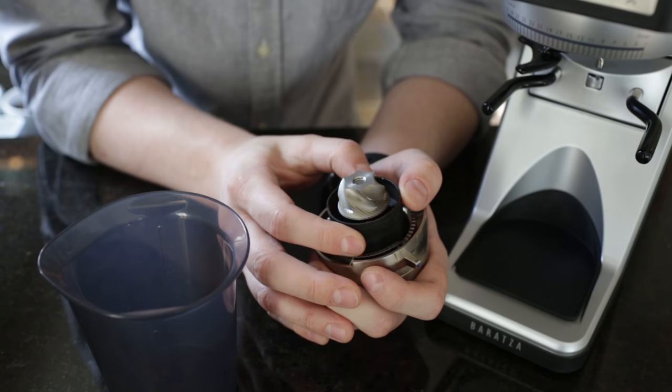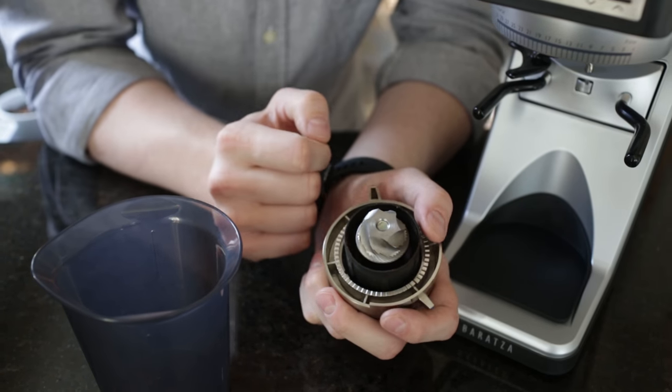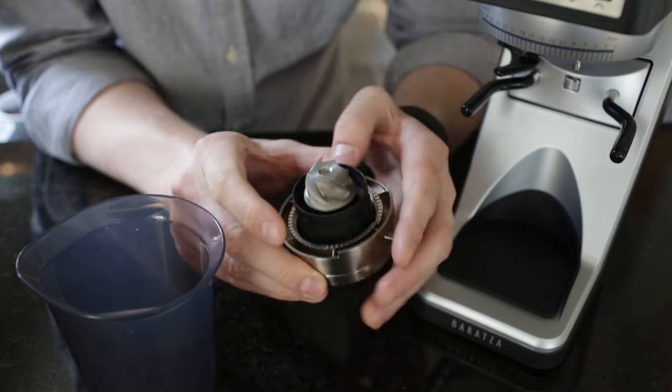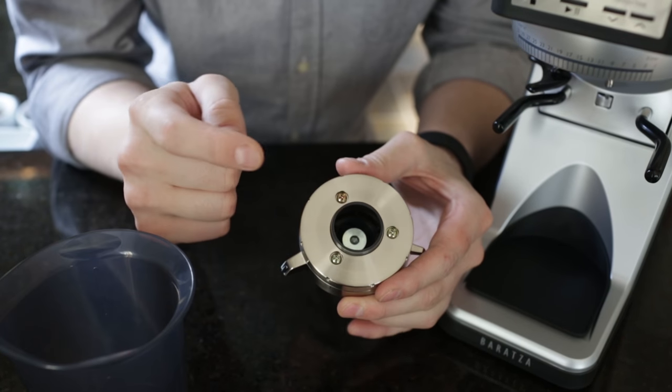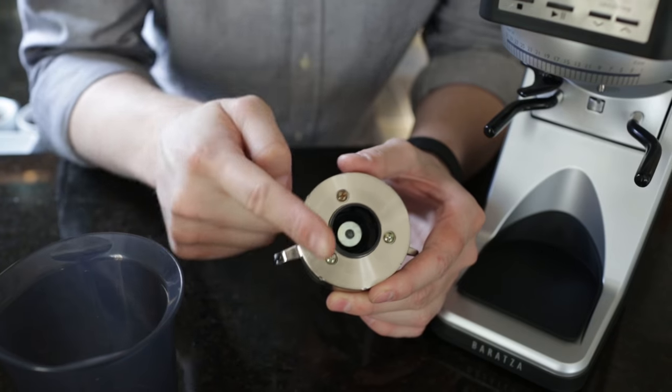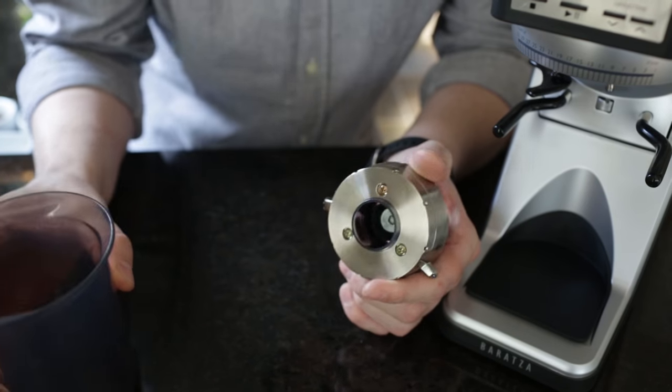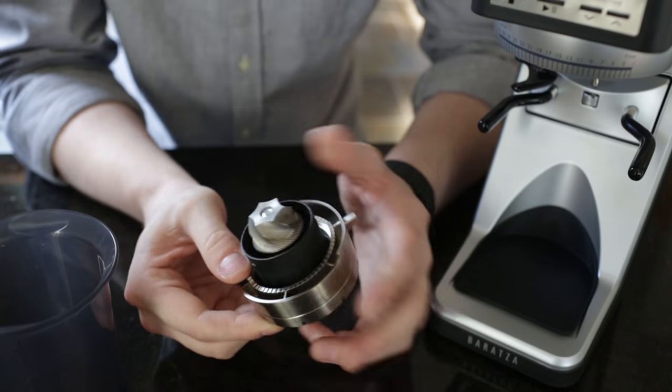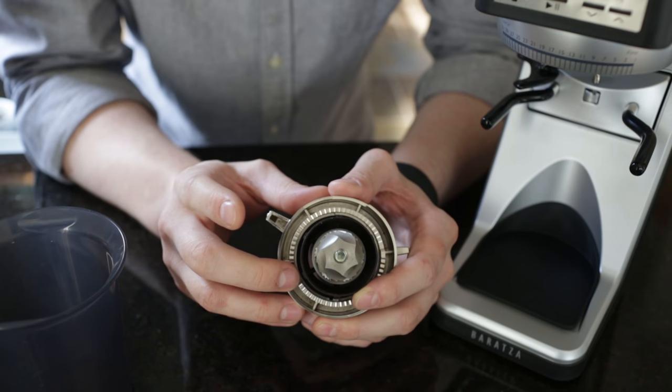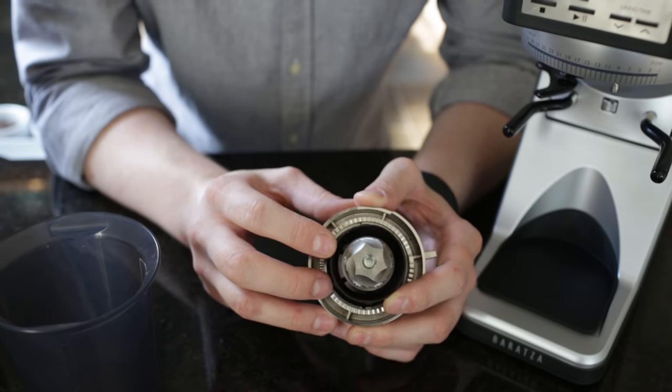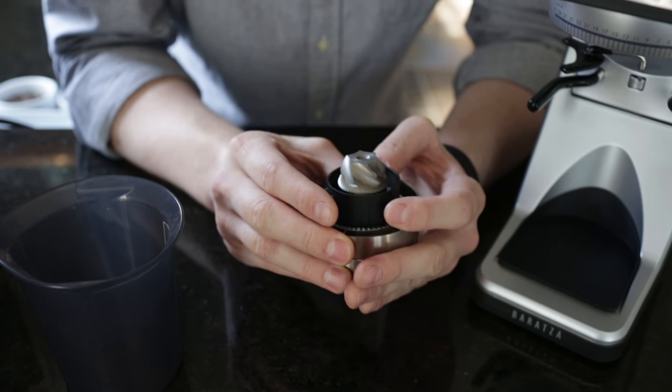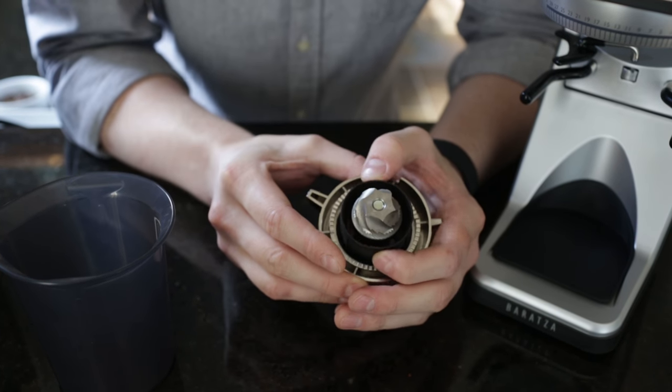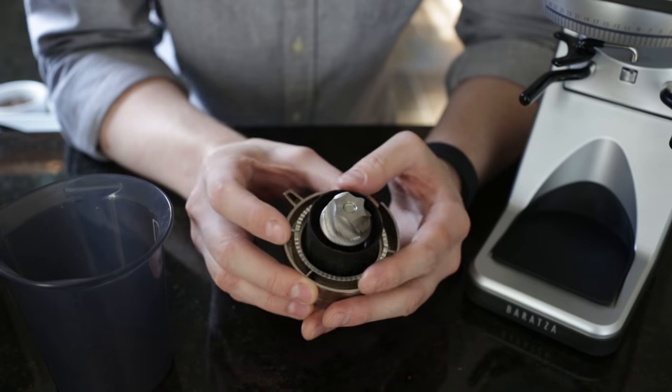What that allows is a very unique straight-through grind path, meaning when the beans are ground, they fall directly down vertically into your container or your portafilter or what have you. That means there's very few places for grinds to stay back and be retained in the grinder. The Sette series has very low grind retention, on the order of a gram or less, in most cases.